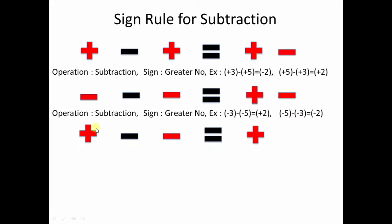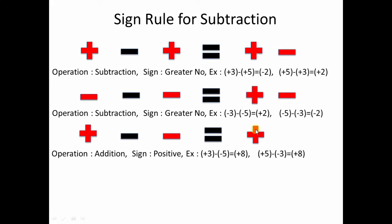The third case: a positive number minus a negative number always gives a positive result. The operation becomes addition. For example, plus 3 minus minus 5: minus times minus is plus, so plus 3 plus 5 equals plus 8. For plus 3 minus minus 3: minus times minus is again plus, so the result is also positive — in both cases the answer is always positive.